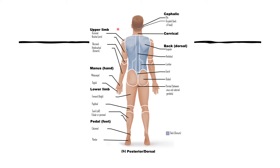On the posterior side, we also find the scapular region — the shoulder blades — and the vertebral region, where the vertebral column encloses the spinal cord. The lumbar region refers to the lower back. The gluteal region includes the gluteus maximus, medius, and minimus muscles found in the buttocks. The perineal region is the area between the anus and the external genitalia.